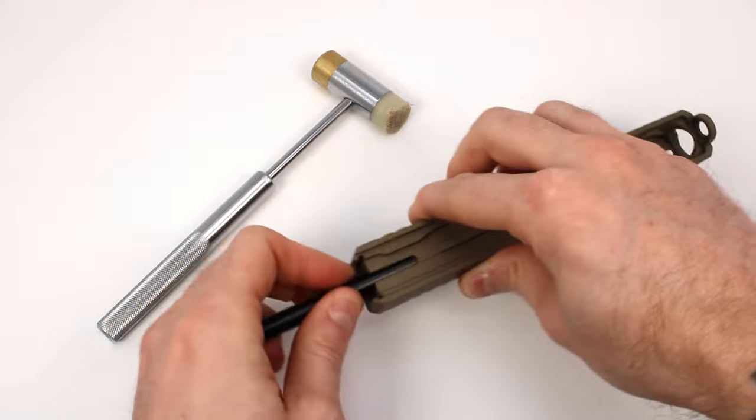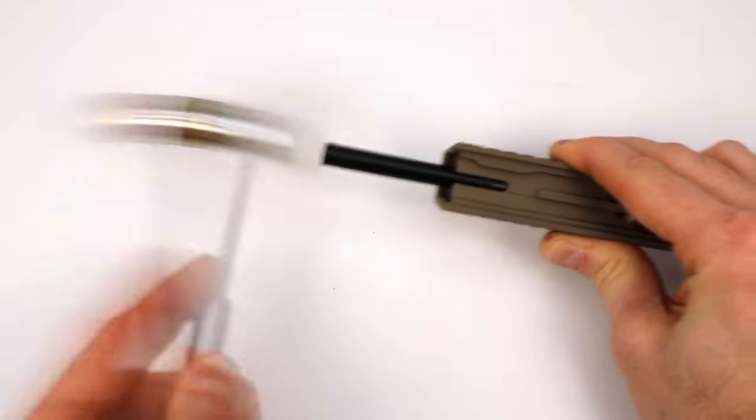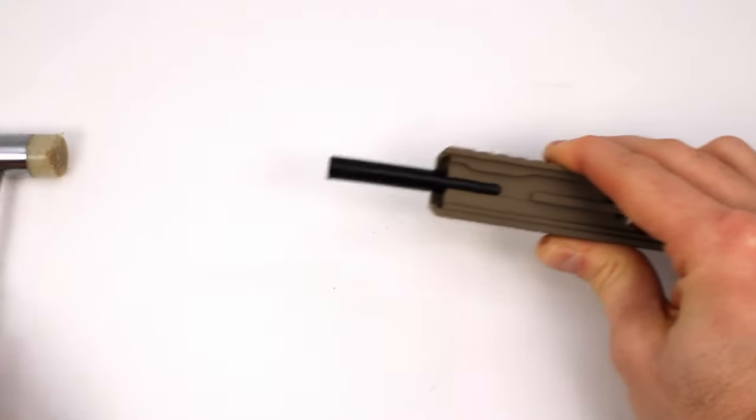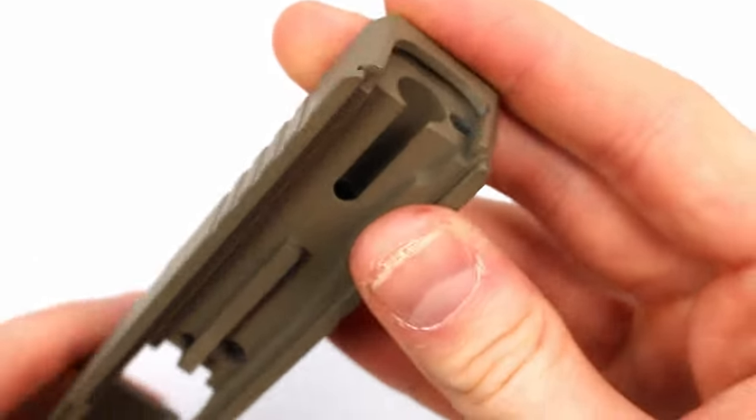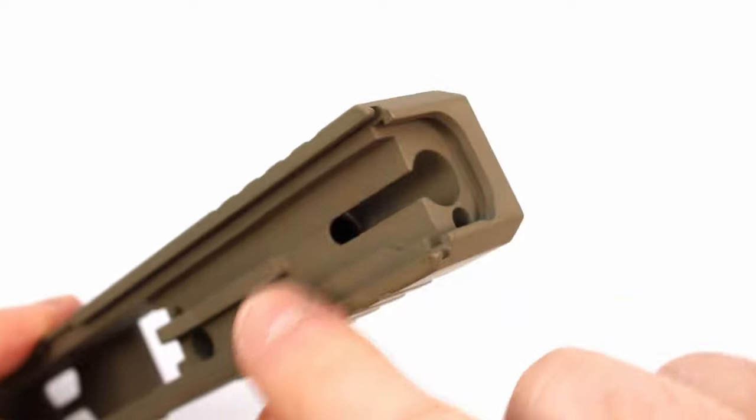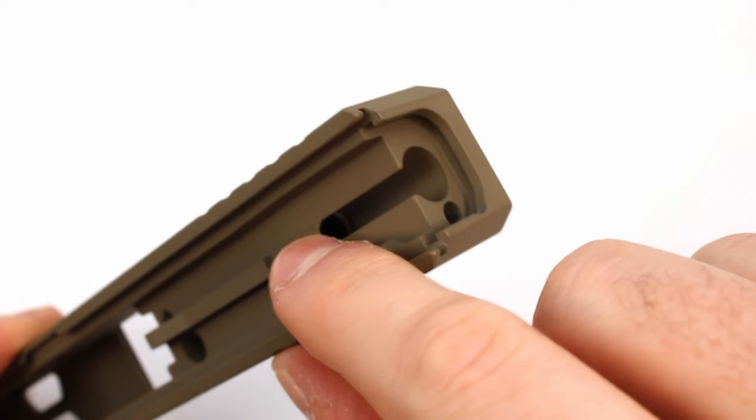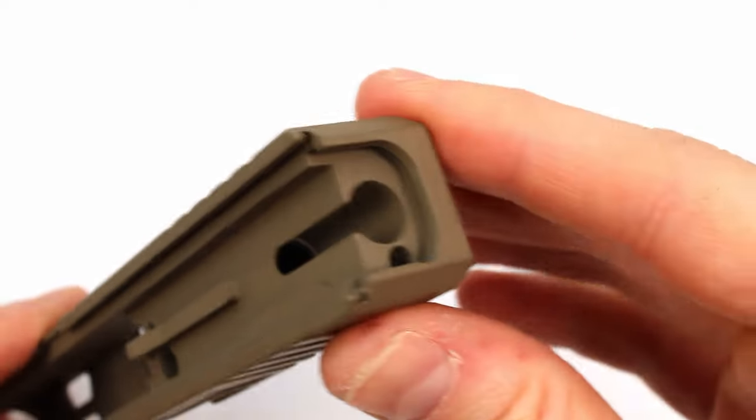Easy enough. Once you've finished tapping the channel liner in all the way, you can verify that it is fully seated. It should be resting just below this little raised lip inside the slide itself. It's kind of hard to see but you can just barely make it out in there.